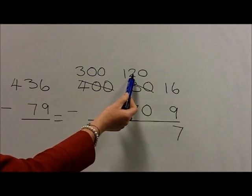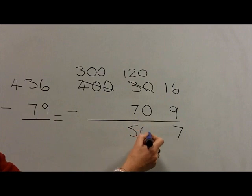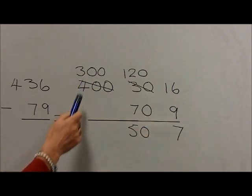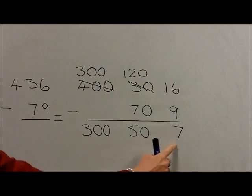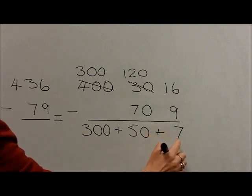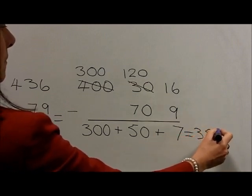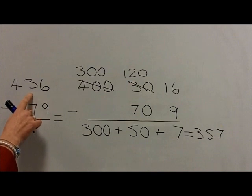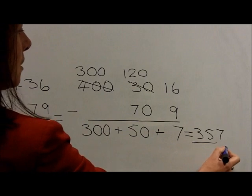We now can do 120 take away 70, which gives us 50. Moving on to the 100s column, we have 300 take away 0, which gives us 300. The separate partitions are added back together so that 300 plus 50 is 350, plus the 7 gives us 357. Therefore, 436 take away 79 is equal to 357.